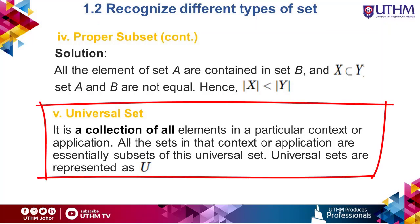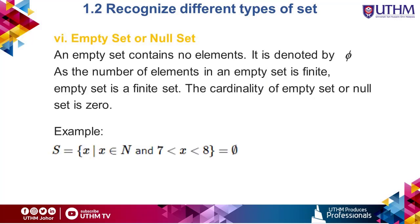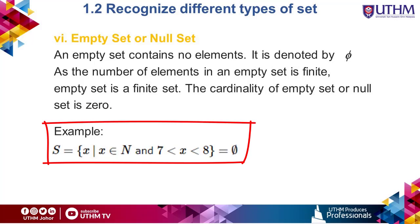Let's see another type of set called the universal set. It is a collection of all elements in a particular context or application, and is denoted by the capital letter U. For example, if we define U as the set of all animals on earth, then a set of all mammals is a subset of U. An empty or null set is a set with no elements, denoted by the null set symbol. The cardinality of the empty set is 0. For example, X is a natural number and the value of X is between 7 and 8 — the set is empty because there is no natural number between 7 and 8.